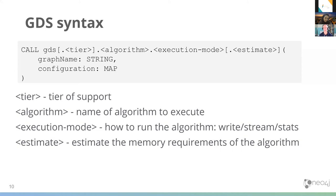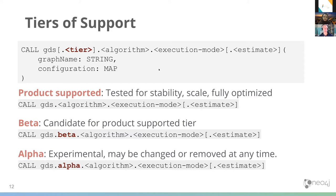The execution mode can be stream or write. You can also use dot estimate to see how much memory an algorithm will use before running it — it won't blow up; it'll give an error if you don't have enough memory. Production tier means everything's been tested for stability, scale, and fully optimized. Beta is just below that. Alpha means it's been recently added and the API may not be stable yet and could change.